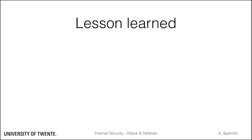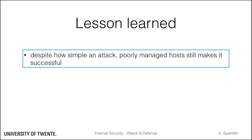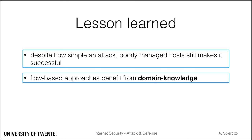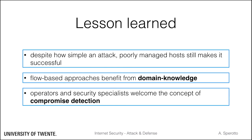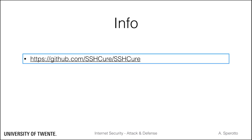There are a few takeaway messages from studying Secure. First, we should not underestimate an attack — no matter how simple or old an attack is, until poorly managed hosts exist, the attack can still be powerful, and this applies to SSH dictionary attacks as well. Second, a flow-based approach highly benefits from specific domain knowledge, and this is even more the case when working with aggregated data. Finally, the future of intrusion detection is in compromise detection, where the number of alerts is kept small and the confidence that an attack is successful is high. If you are interested, have a look at the Secure GitHub repository.